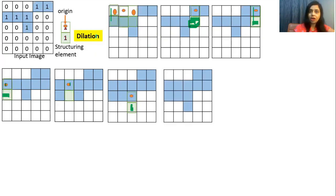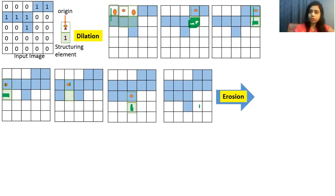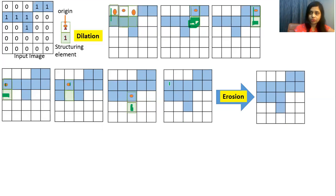That is how we do the dilation of the image — dilation is over. What is next? After dilation you have to take this image as an input image and perform erosion. For the erosion operation, the output of dilation is the input for erosion. We will use the same structuring element and start putting it at every position. When we put it here, there is no overlapping between this blue color and this structuring element so nothing will change. Then we keep our structuring element here — there will be overlapping between origin and white, so nothing will change.